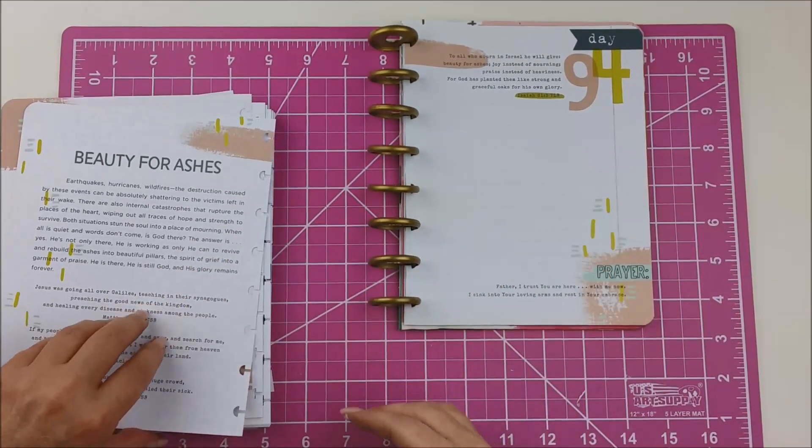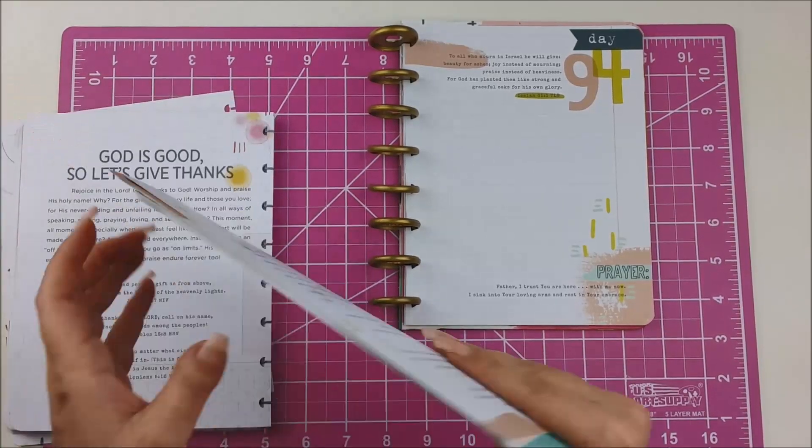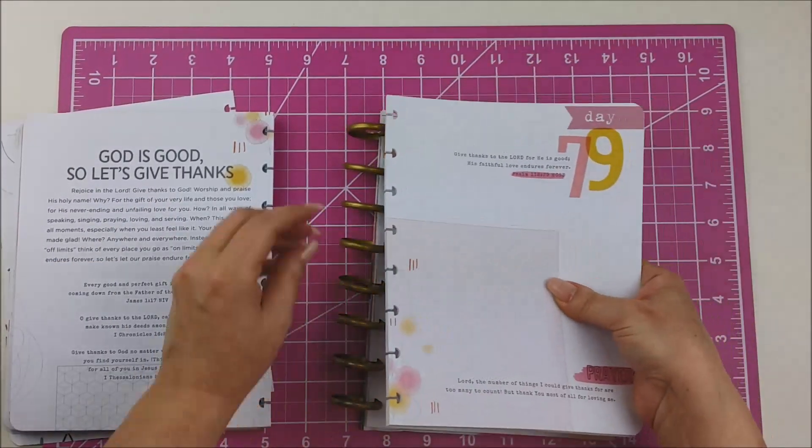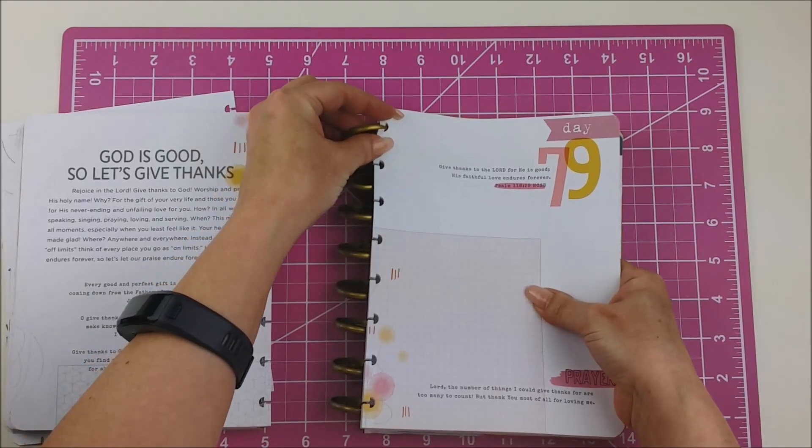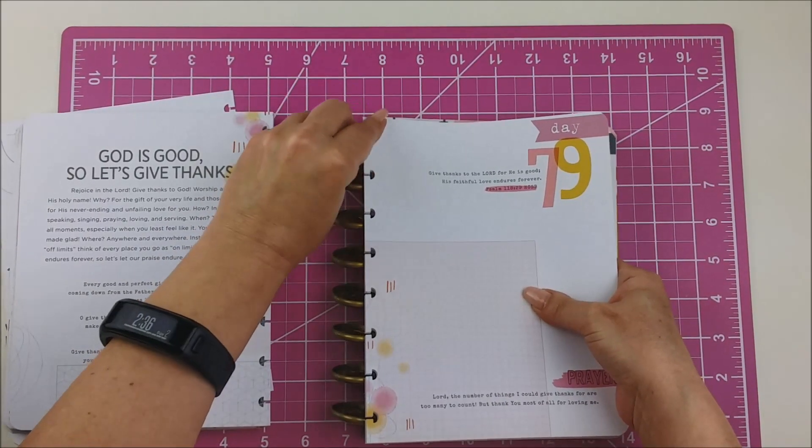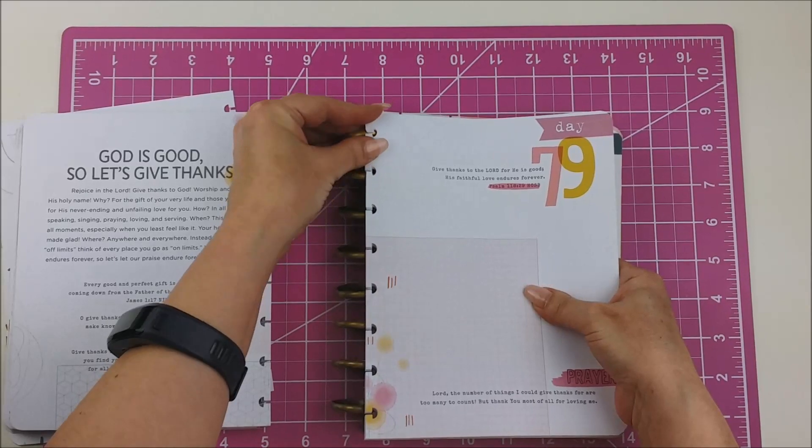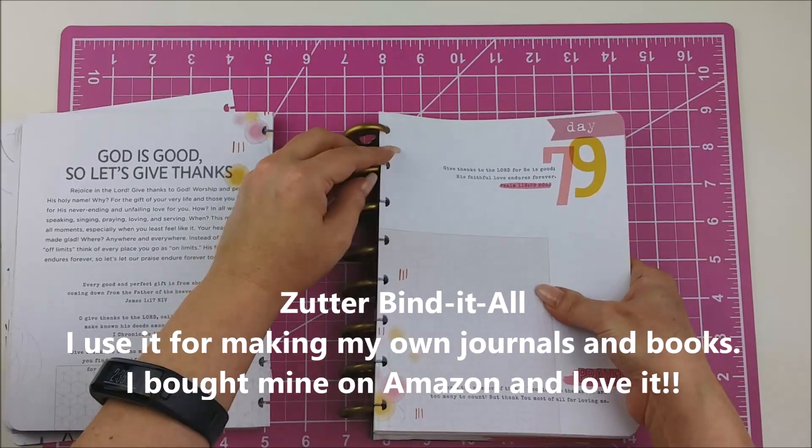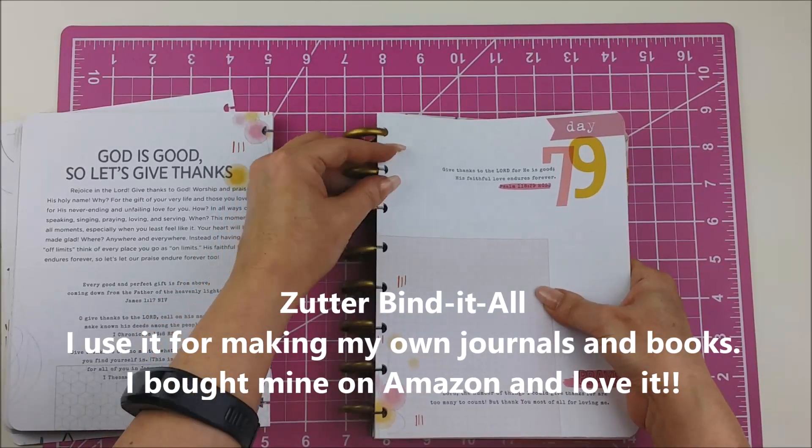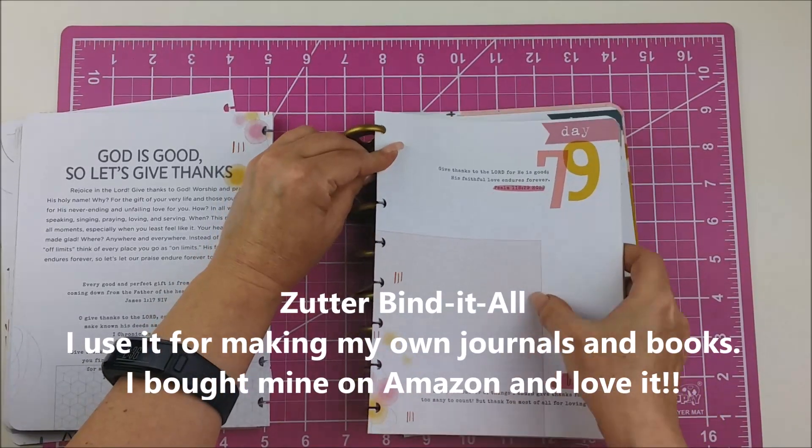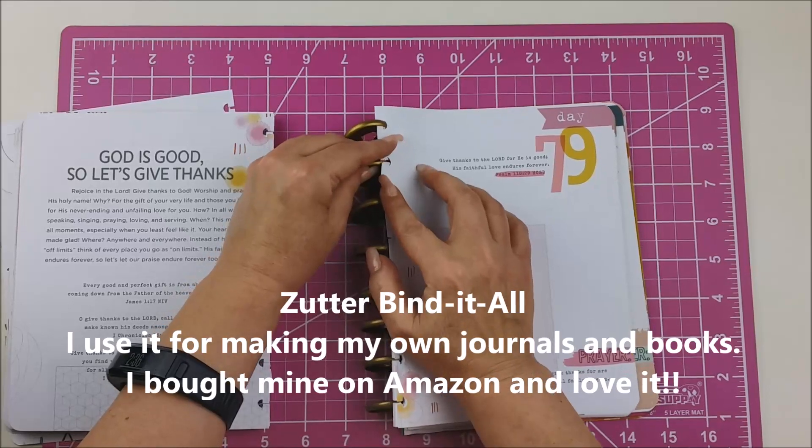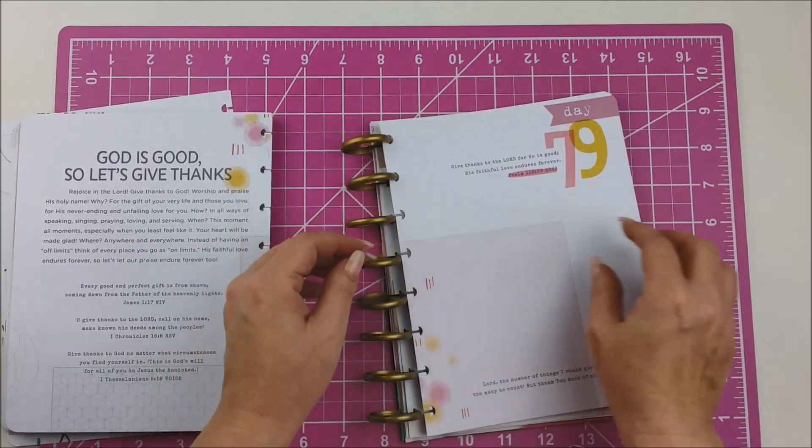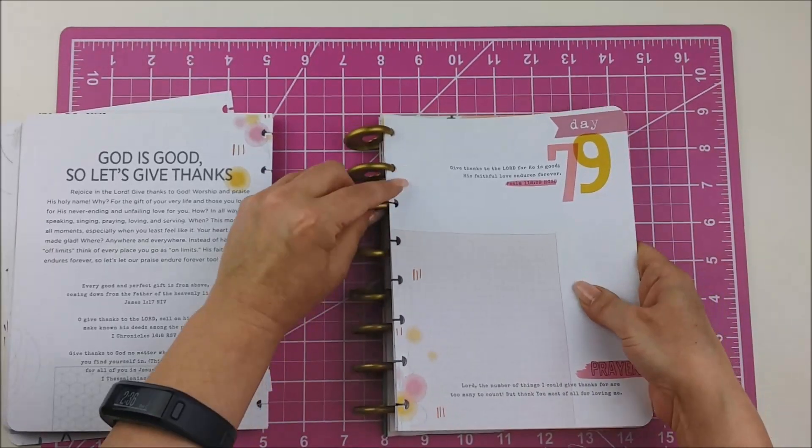Those are a disc binding planner system through Staples and Amazon. And so it doesn't have to be just happy planner. And if you're interested in doing like a spiral bind you can use. I have the Zing. What's it called? Zing Z something machine for spiral binding.